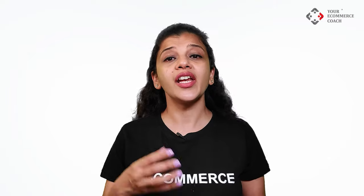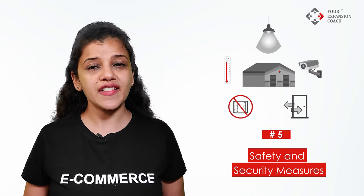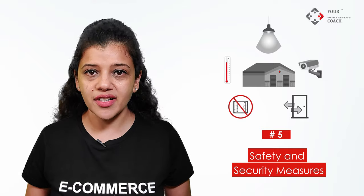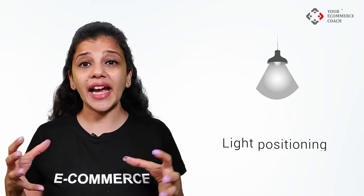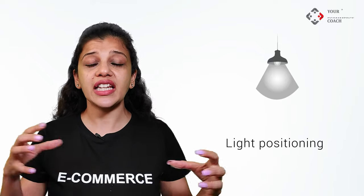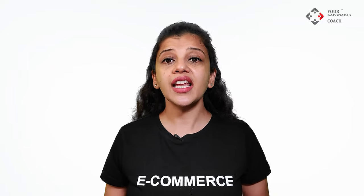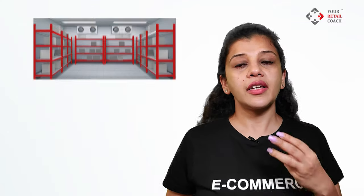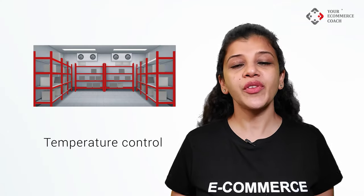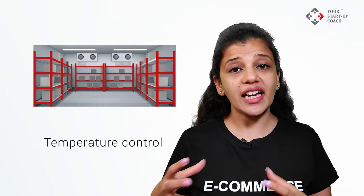Step five: safety and security measures. To ensure your warehouse design planning is safe and secure, consider the following parameters. First, CCTV positioning — ensure there are no blind spots. Second, light positioning — ensure even lighting in all areas. For example, if your lights are positioned above the racks, this affects efficiency; ensure adequate light within the aisle spaces between the racks. Third, temperature control requirements as per the product stored — for example, in case of cold storage, ensure you've planned an ante room.